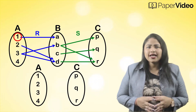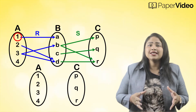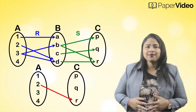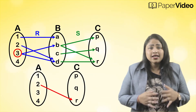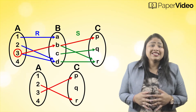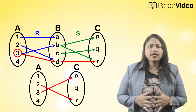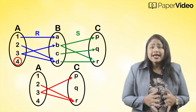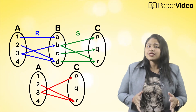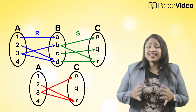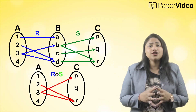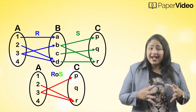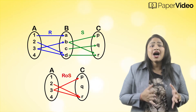Element 1 of set A is not related to any element in set C. Element 2 of set A is related to element R in set C. Element 3 of set A is related to element P in set C, and also to element R in set C. Element 4 of set A is not related to any element in set C. This relation between set A and set C forms the composition of relation R and relation S.